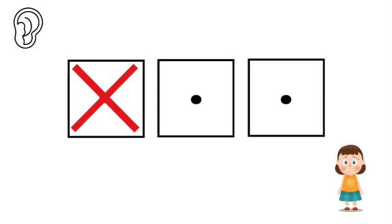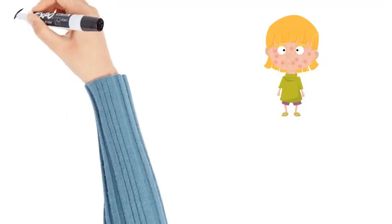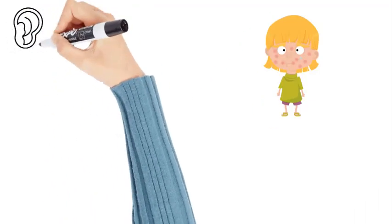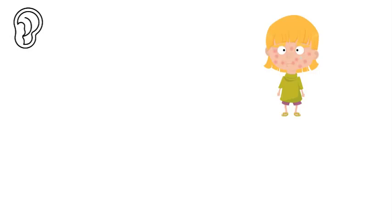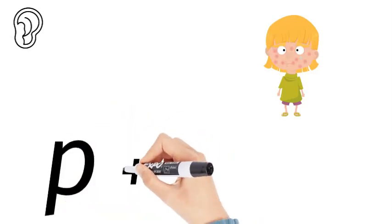So pox, take away the P, we're left with ox. Now we're going to sound it out but we're going to write the sounds. So what's the first sound that we hear? The first sound we hear is P. So we put a P, O.